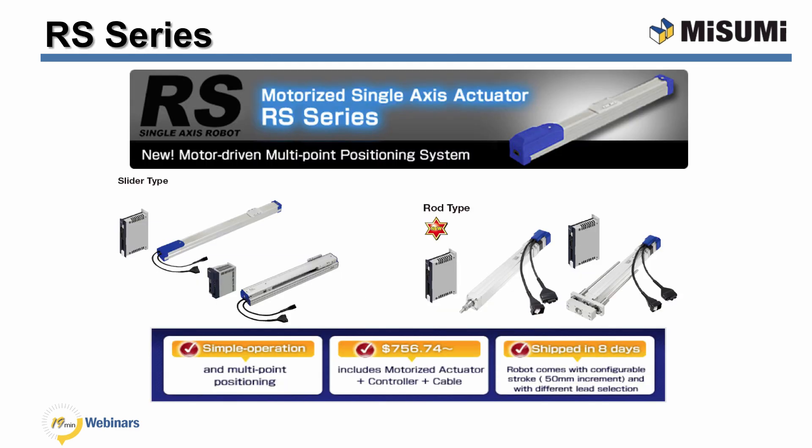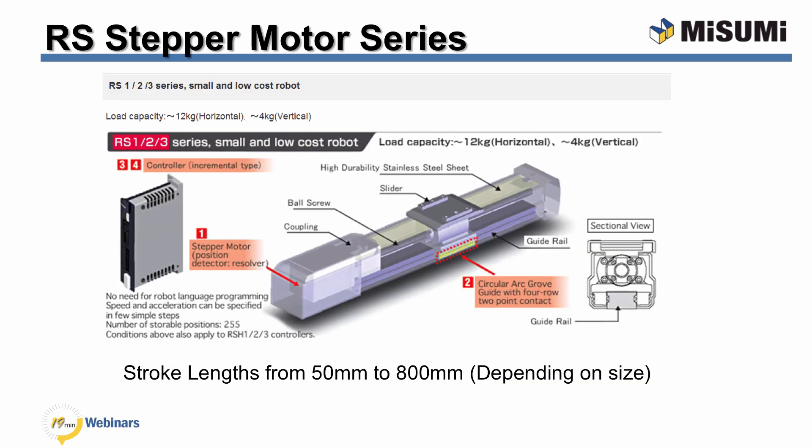Our RS Series actuator is a single-axis multipoint programmable system. It consists of the robotic actuator, the controllers, and the cables for all one price. The system can run off of multi-function programmability using a single software package. Most sizes are available with or without brakes, and it can also be ordered in a cleanroom version. The RS Series robot uses a hybrid stepper motor with resolver feedback, a precision rolled ball screw, and a precision ground linear guide rail system. It has a protective housing that keeps the internal mechanism clear from parts and debris.